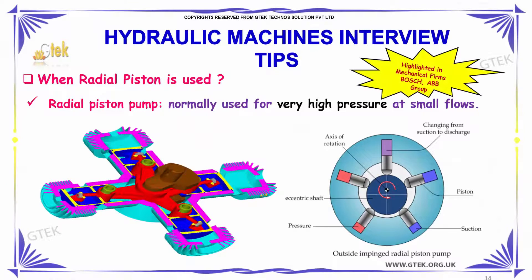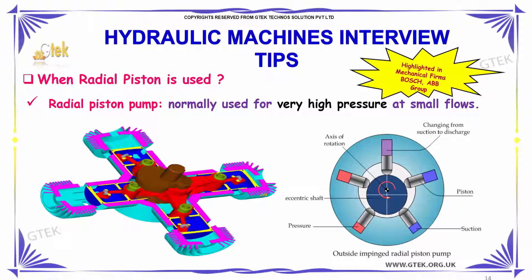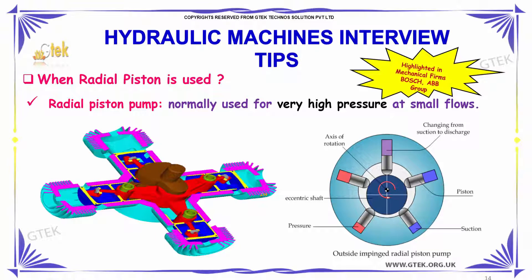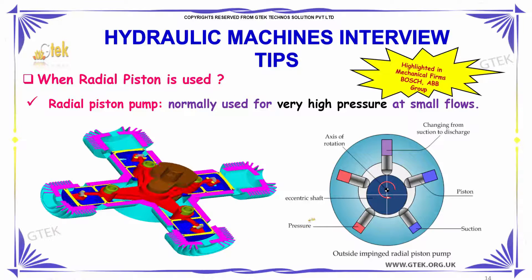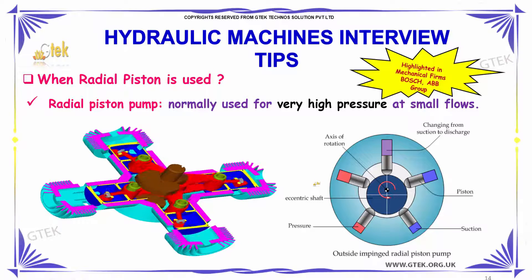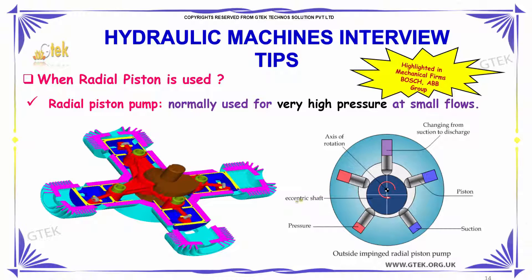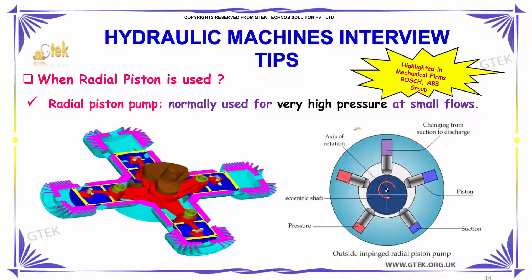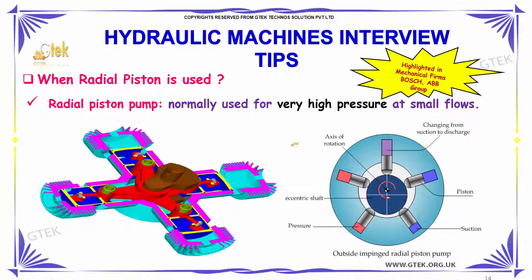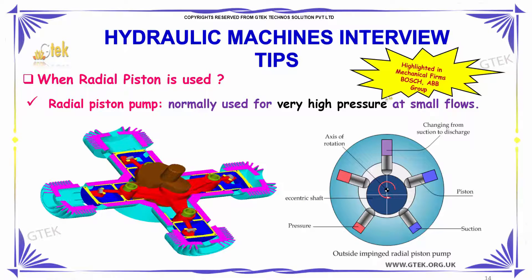When is the radial piston pump used? The radial piston pump is normally used for very high pressure at small flows.